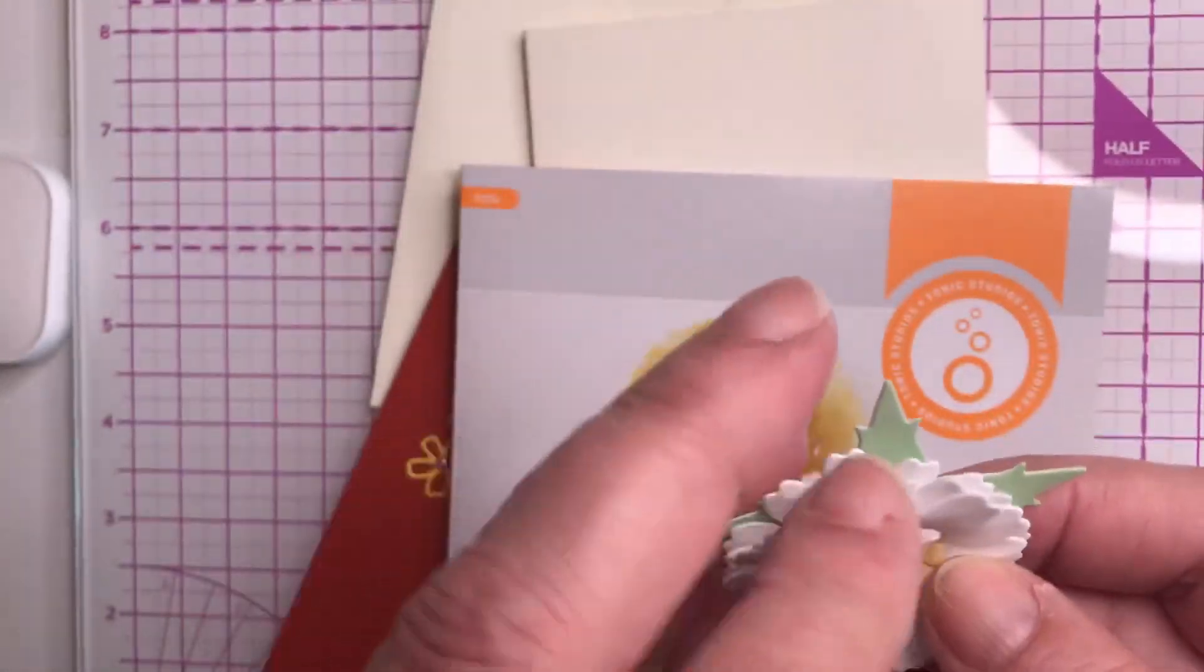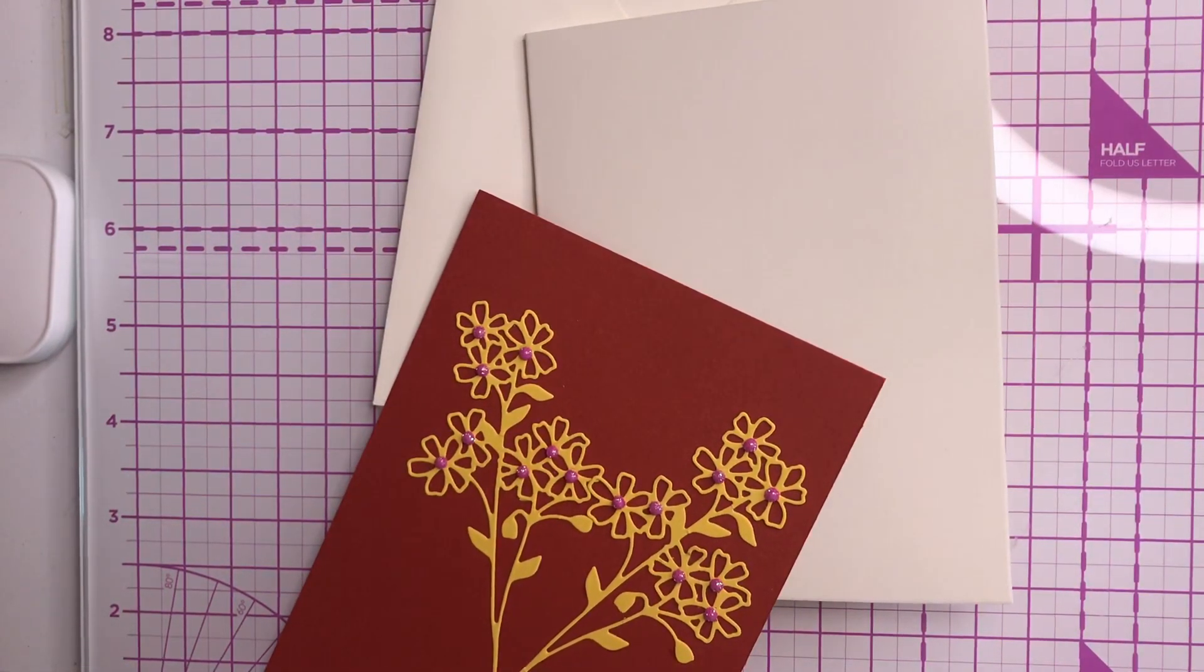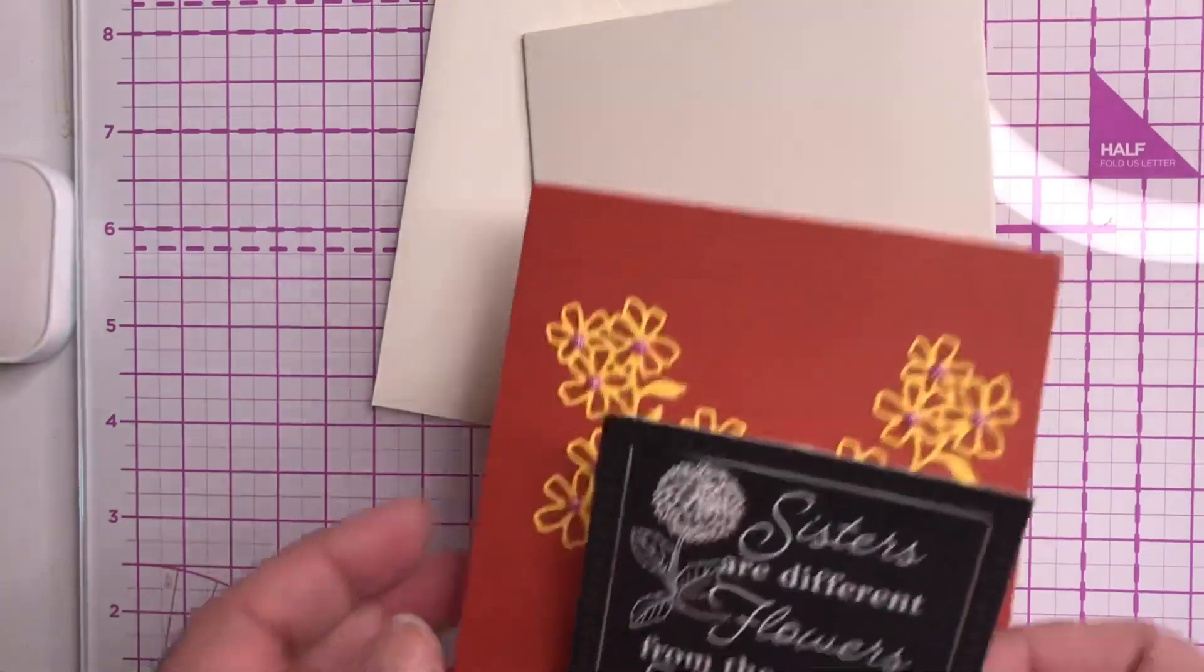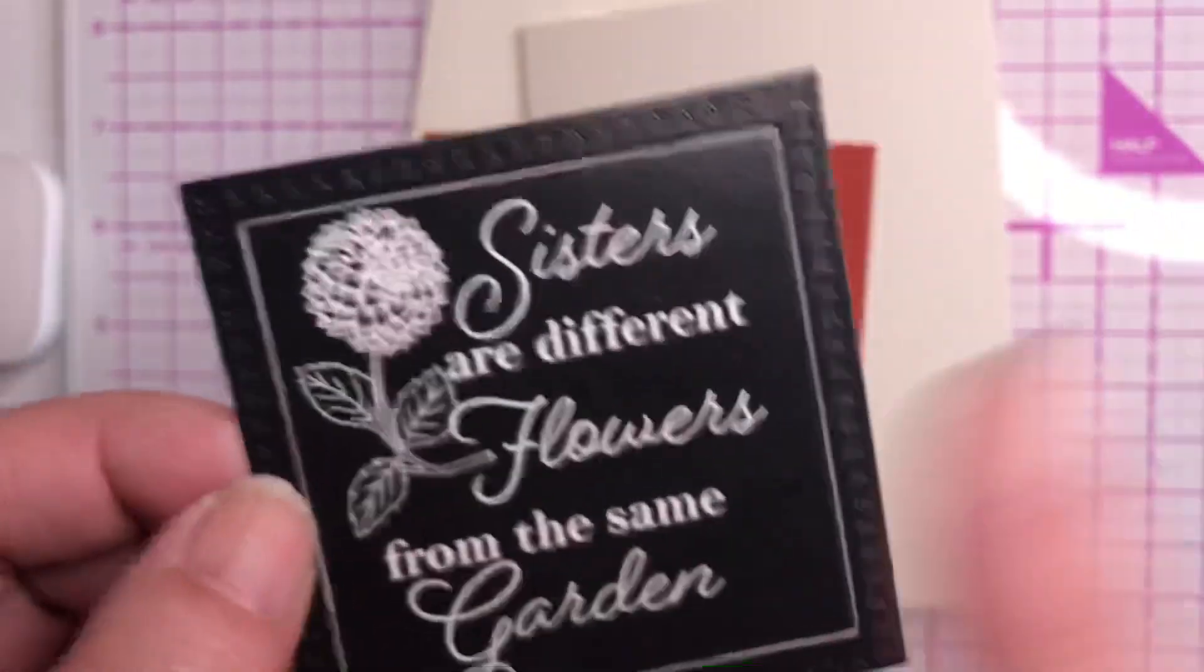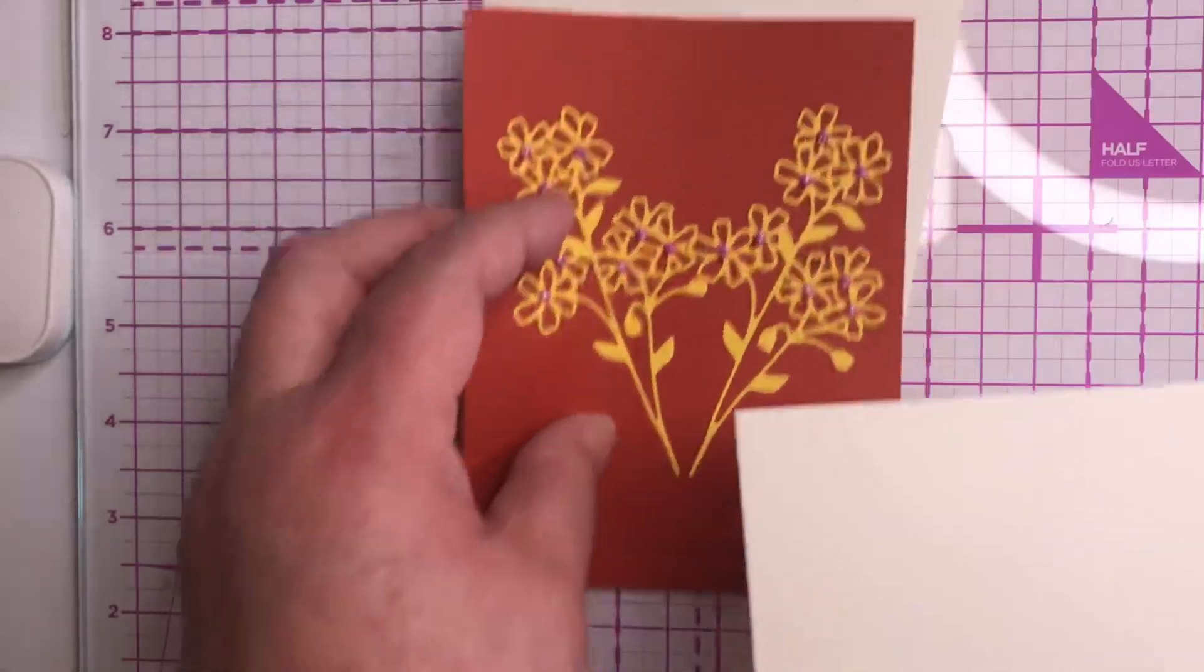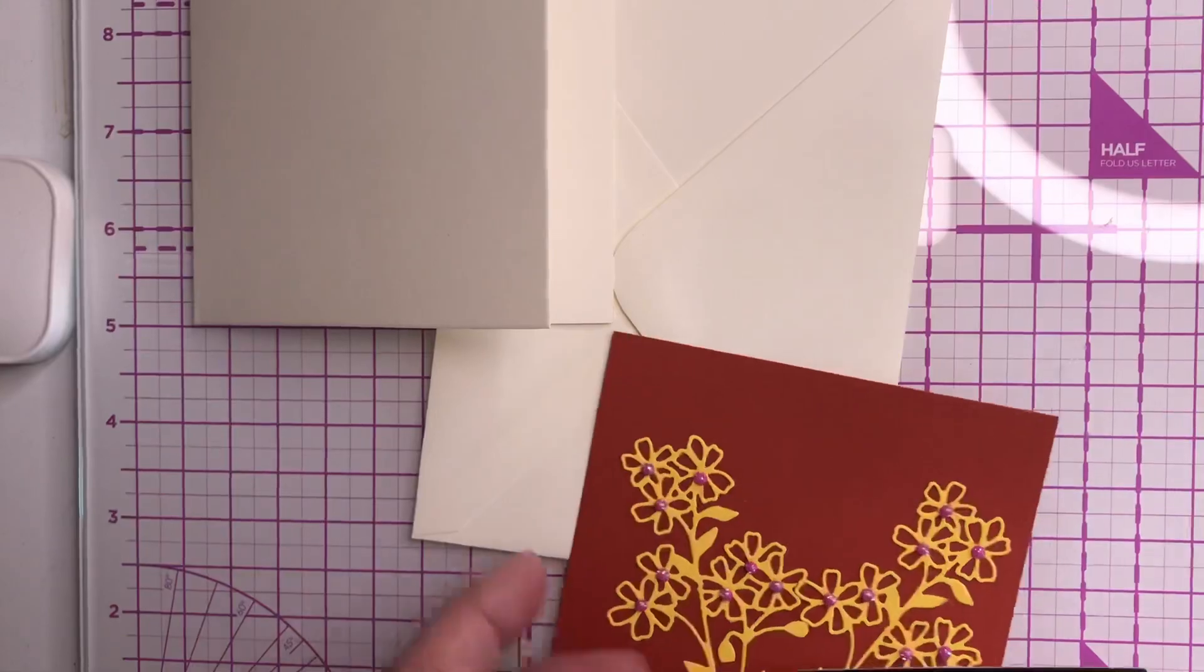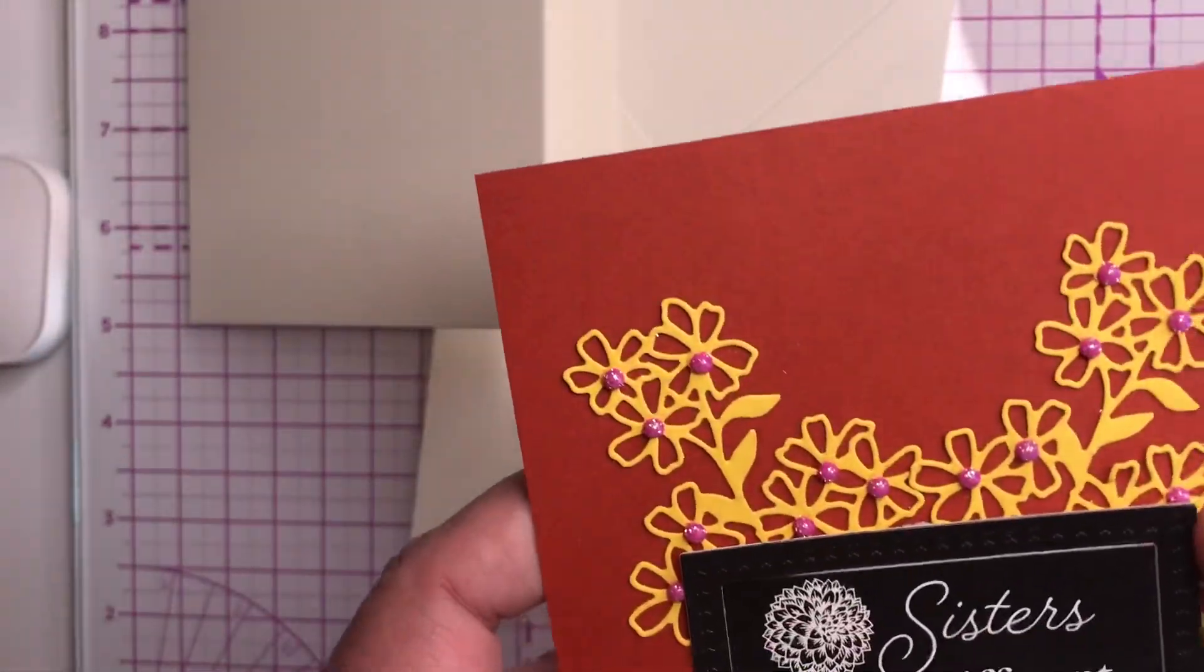That's what I'm going to put on the card. And then for the sentiment, I'm not sure where this came from, but I found it somewhere. It says 'Sisters are different flowers from the same garden.' I thought that was a very pretty sentiment. I have not stamped the inside yet, but I will. This is what I want to use on here.